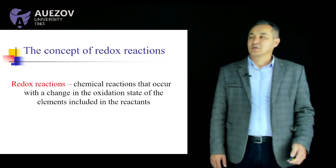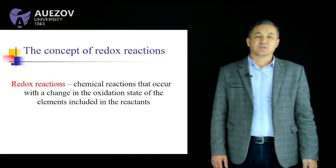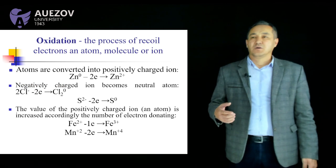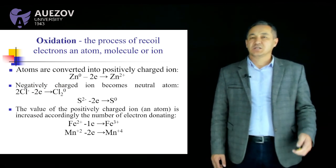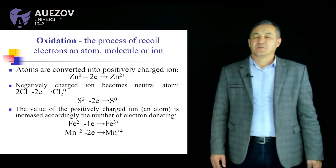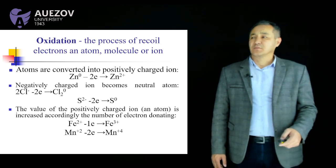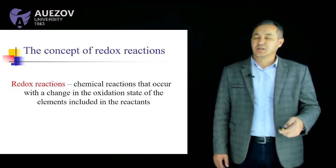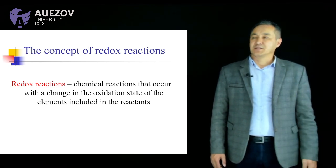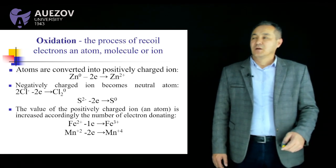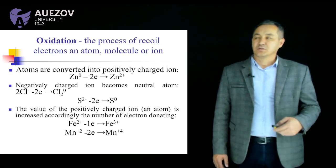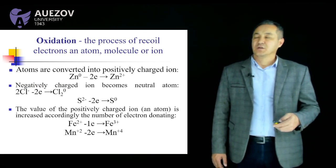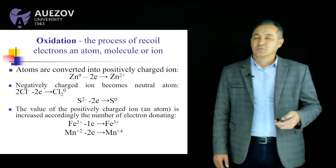Redox reactions are reactions which proceed with a change of oxidation degree of chemical elements. In a redox process we can classify two substances.